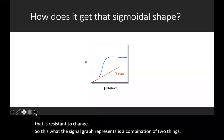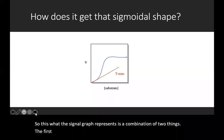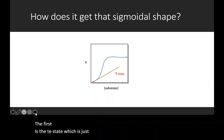The first is the T state, which is just a linear line and is what we get if all the enzyme is in the tense state or locked.